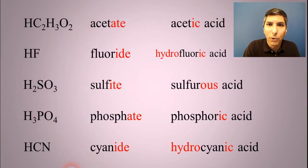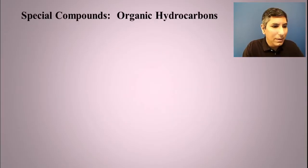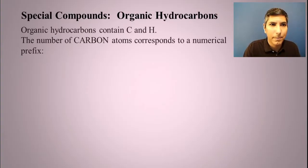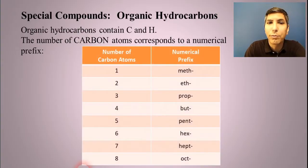Now there's another type of formula that we're going to look at. And these are simple organic hydrocarbons. In this video, we're going to keep it very simple. Organic hydrocarbons have carbon and hydrogen. That's why they're called hydrocarbons. Hydrogen and carbon.